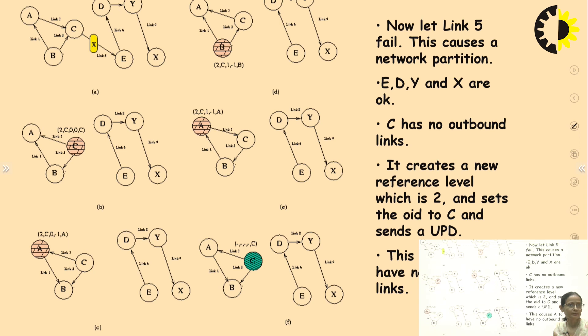Now let link 5 fail. This causes a network partition. Now we are having two subsets. E, D, Y and X are okay in this case, but C has no outbound link. It creates a new reference level which is 2 and sets the OID to C and sends a UPD. This causes A to have no outbound link.